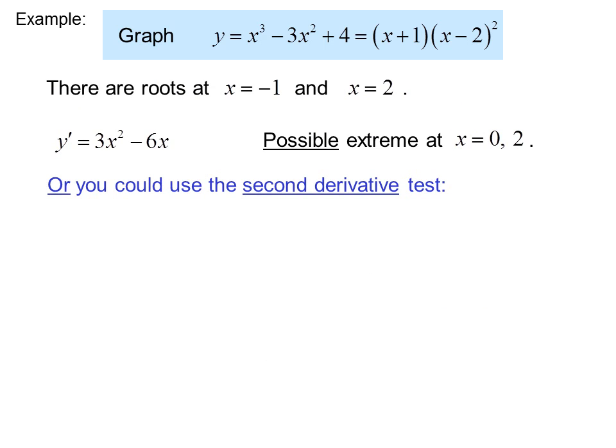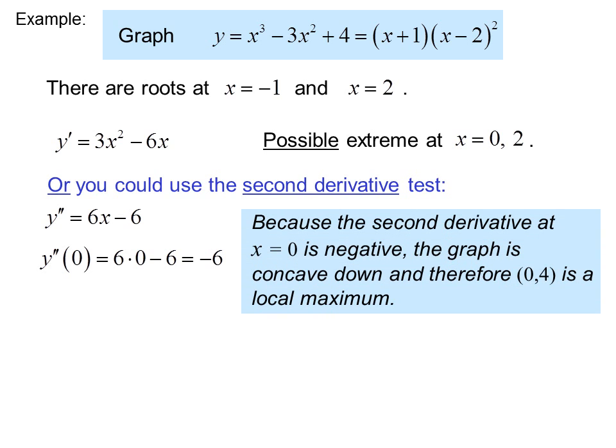Alternatively, you could use the second derivative test. We find the second derivative: y double prime equals 6x minus 6. At our first critical point, y double prime of 0 equals negative 6. Because the second derivative at x equals 0 is negative, the graph is concave down, and therefore (0, 4) is a local maximum.